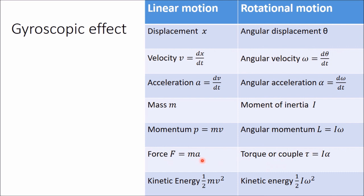Force F is analogous to torque in rotational motion. F equals mass times acceleration; in rotational motion, torque equals I times angular acceleration. Similarly, kinetic energy of a body moving in a straight line is ½mv², while kinetic energy of a rotating body is ½Iω². So mass is replaced by moment of inertia I, and linear velocity is replaced by angular velocity ω. Like displacement, velocity, and acceleration, all these are vector quantities.